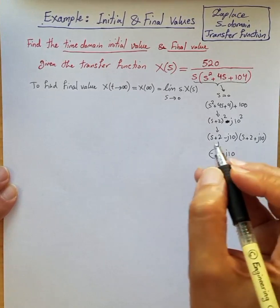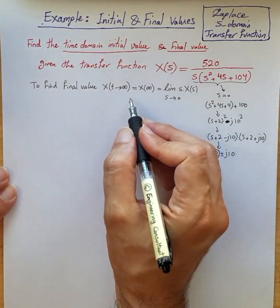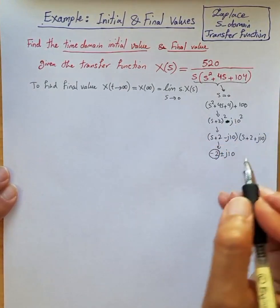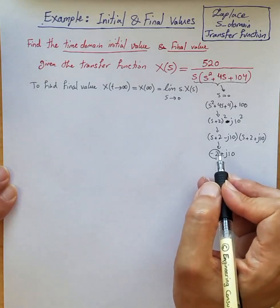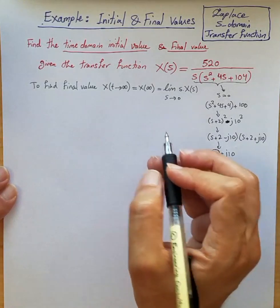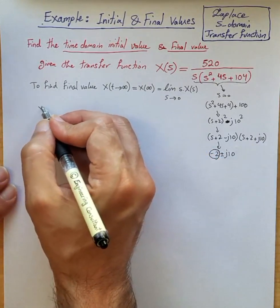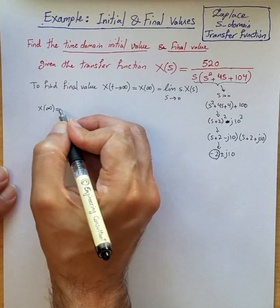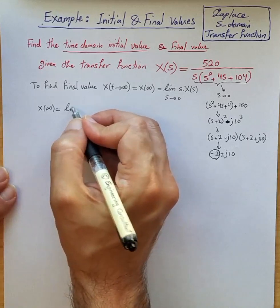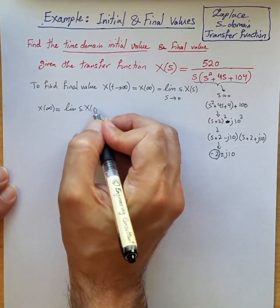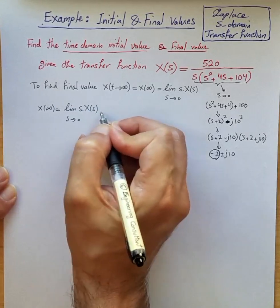So in this case we can apply this theorem. The theorem is valid because the poles are on the left-hand side of the s domain, the function is bounded, and we can find x(∞). In this case, x at time infinity is the limit of s times X(s) when s goes to 0.